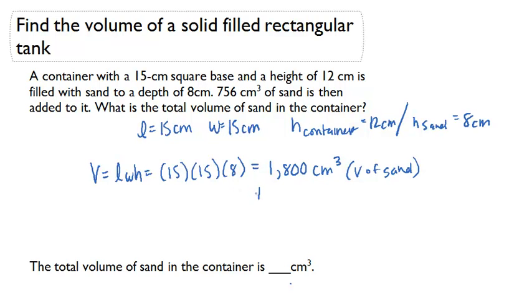Next thing we need to do is add in the 756 cubic centimeters of sand. If I do that, I get a total volume of sand to be 2,556 cubic centimeters.